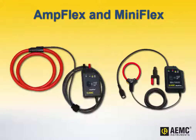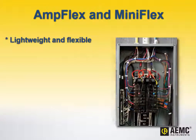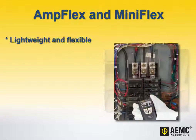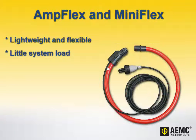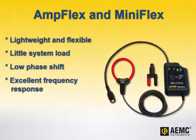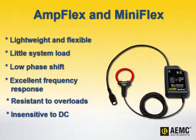The AEMC AmFlex and Miniflex families of AC current probes enable measurements on conductors where standard clamp-on probes cannot be used. AmFlex and Miniflex probes are lightweight and can be installed in tight places, around cable bundles, around wide or large bus bars, or even wrapped around irregular shapes. These probes create virtually no load on the system under test, have a low phase shift and excellent frequency response, and cannot be damaged by overloads, and they are insensitive to DC currents, so only the AC component of the measured signal is displayed.